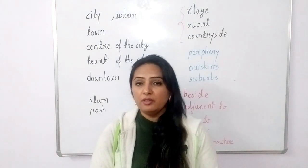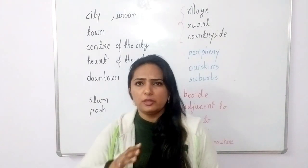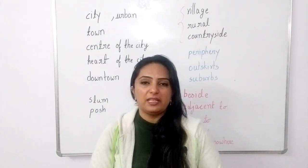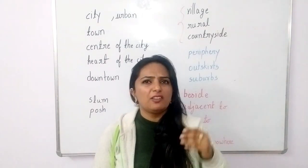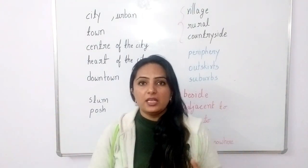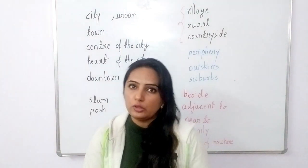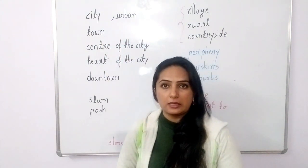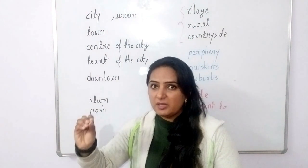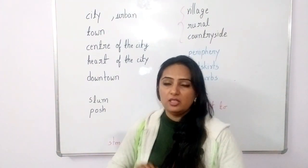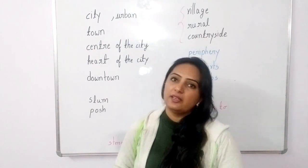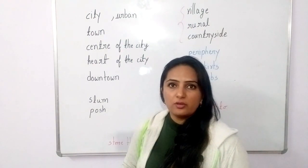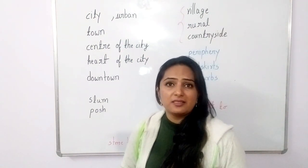Whenever we are given a topic where we have to talk about a particular location or a particular building, the first thing we say is the name of the place. After that, we say where it is situated — whether it is in a city or in a village. For example: I usually pay a visit to Restaurant X with all of my friends or family members whenever there is a special occasion. In order to celebrate my birthday, I went to Restaurant X last weekend. The next person will then ask you where it is situated.